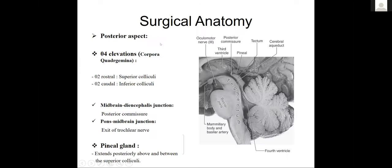Going to the posterior aspect of the midbrain, we have very prominent structures. The posterior commissure marks the junction between the midbrain and the diencephalon, and the exit of the trochlear nerve marks the junction between the midbrain and the pons below.